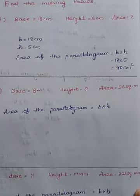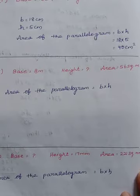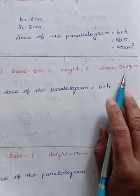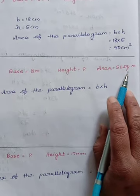Next, roman letter 2. Base is 8 m, height we do not know the value. Area is given 56 square m.